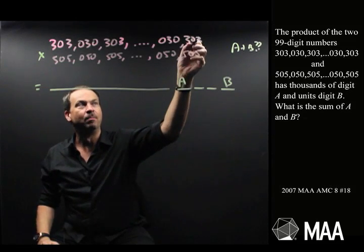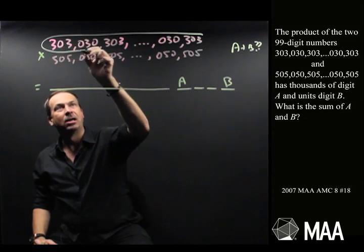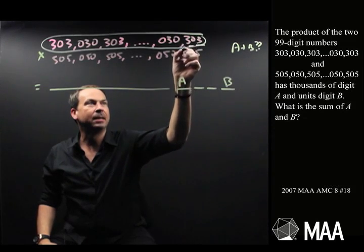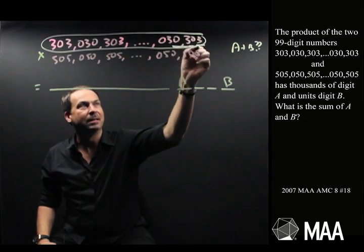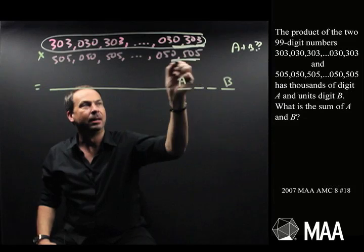So maybe—I'm just thinking out loud here—if I took this number and only looked at the units, tens, hundreds, and thousands. Let me care about that part of this number. And for the second number, up to the thousands of that.